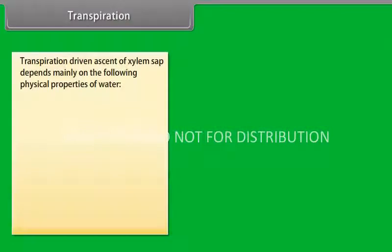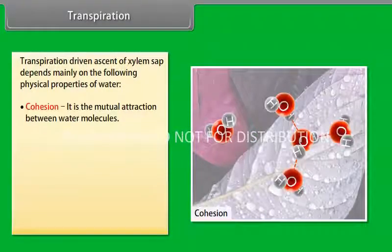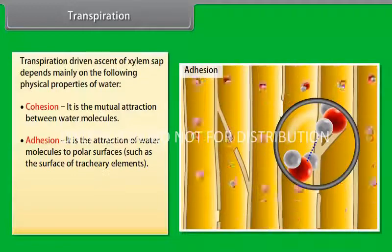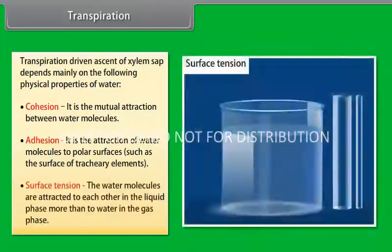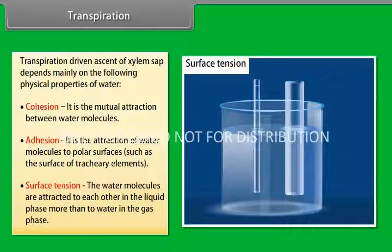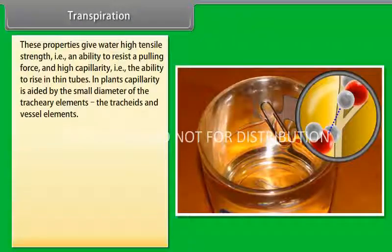Do you know that the transpiration-driven ascent of the xylem sap depends mainly on some physical properties of water? These are Cohesion, Adhesion and Surface Tension. Cohesion is the mutual attraction between water molecules. Adhesion is the attraction of water molecules to polar surfaces such as the surface of tracheary elements. And in Surface Tension, the water molecules are attracted to each other in the liquid phase more than to water in the gas phase. These properties give water high tensile strength, which is an ability to resist a pulling force, and high capillarity, which is an ability to rise in thin tubes. In plants, capillarity is aided by the small diameter of the tracheary elements, the tracheids and vessel elements.